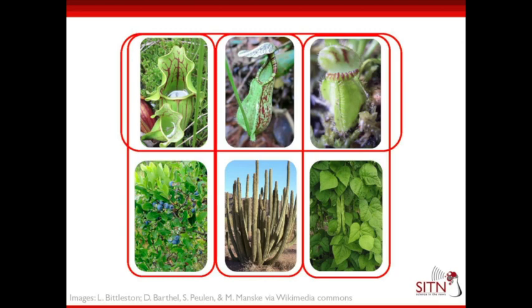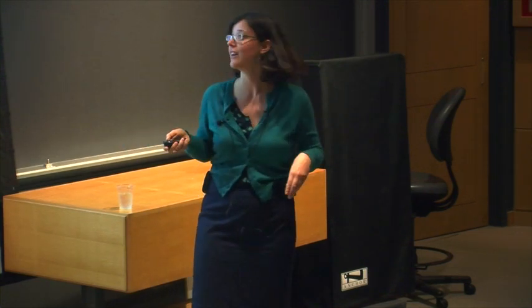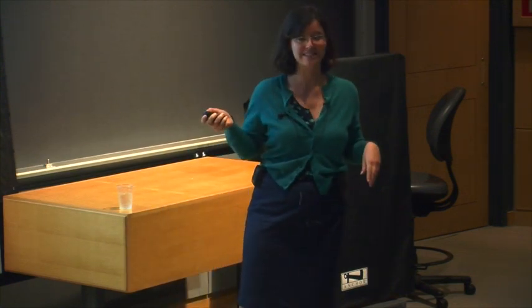To illustrate this, consider three different types of pitcher plants alongside blueberries, cactus, and bean plants. What are the most closely related? Initially scientists thought these pitcher plants all looked similar and were in the same family. But now we know this particular pitcher plant is more closely related to blueberries than to either of the other two. The one from Southeast Asia is more closely related to cactus. And the one from Australia is more closely related to beans. So they're in very, very different lineages and have evolved this same feature totally separately.